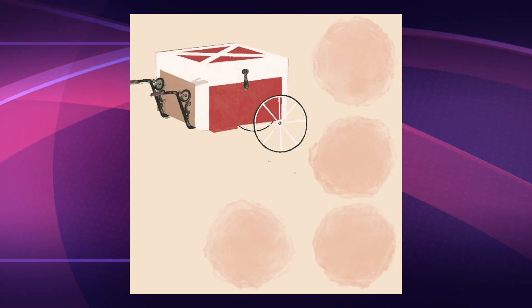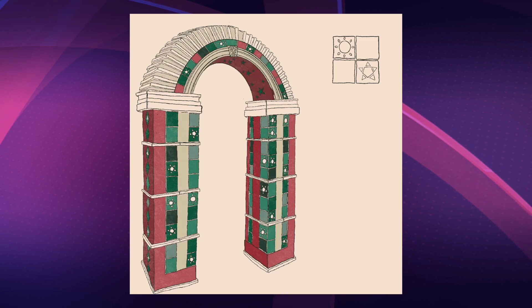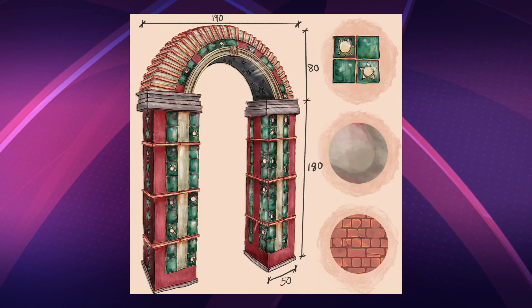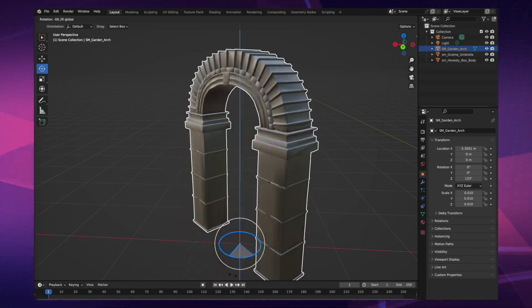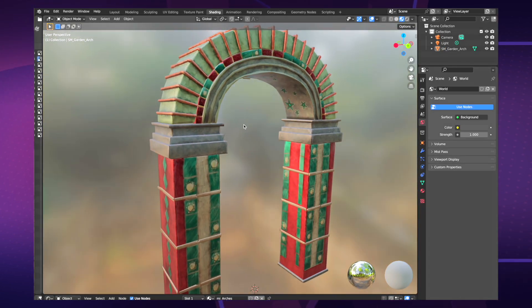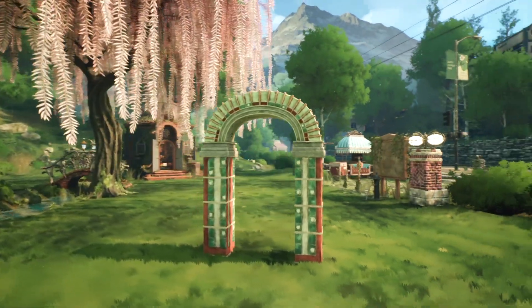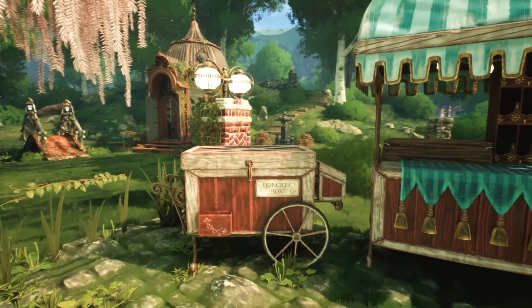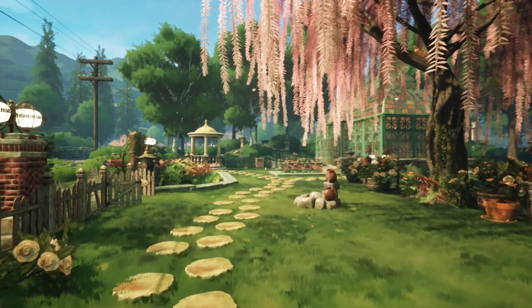After that, we went into the details. All objects you will find in the game were concepted first by our artists, then created in 3D by our modelers, textured, and then finishing touches are applied within the game development environment. This is where we make everything come together and look amazing.